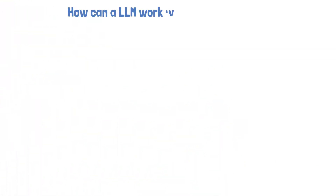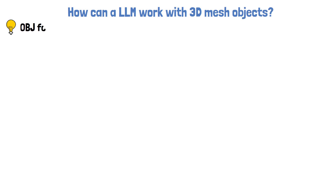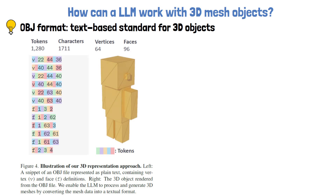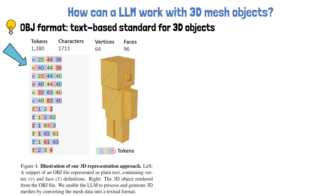Let's now understand how a large language model, which was trained on text, can understand and generate 3D objects. The answer is by using a format called OBJ, which is a text-based standard for 3D objects. We can learn about it using the following figure from the paper. On the right, we have a 3D object of a person, and on the left, we see a sample from that object's OBJ representation. The rows that start with V represent vertices in the three-dimensional space using X, Y, and Z coordinates — these are the positions of the points of the object.